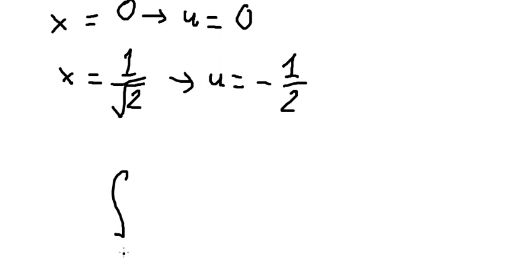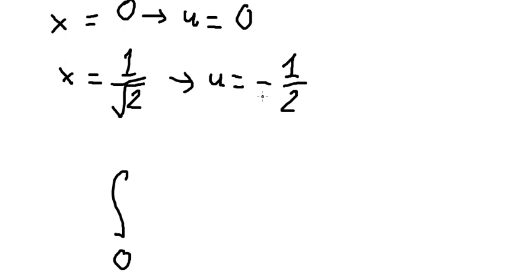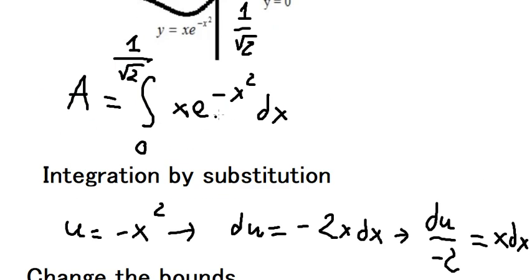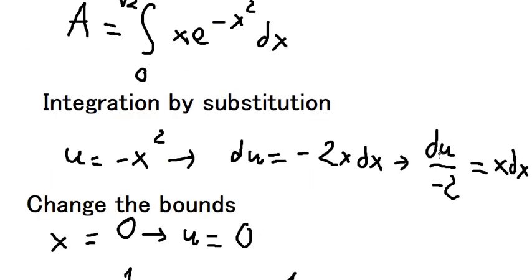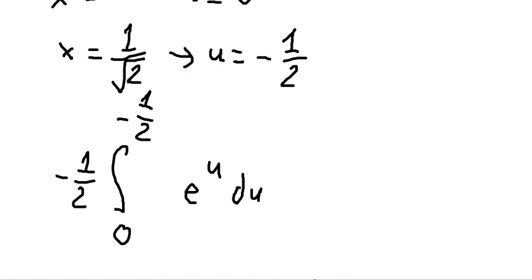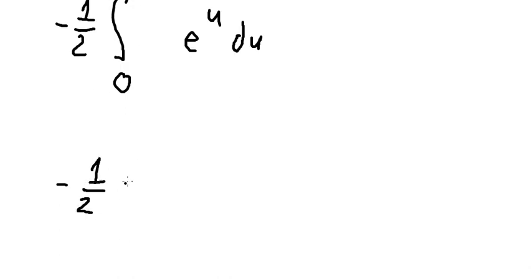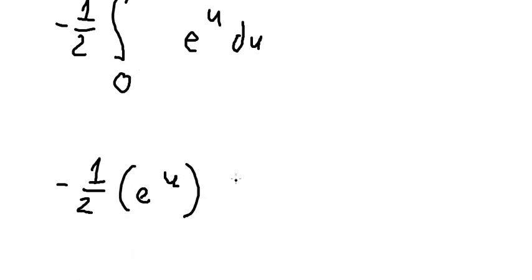When x equals 0, we keep the bound as 0. When x equals 1 over the square root of 2, we change the bound to negative 1 over 2. The e to the power of negative x squared is changed to e to the power of u, and dx is changed to du over negative 2. Now we integrate: the integration of e to the power of u gives e to the power of u, evaluated from 0 to negative 1 over 2.